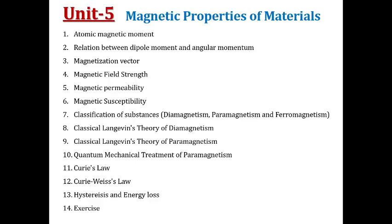In Unit 5, we study the magnetic properties of materials. The contents are: atomic magnetic moment, relation between dipole moment and angular momentum, magnetization vector, magnetic field strength, magnetic permeability, magnetic susceptibility, classification of substances such as diamagnetic, paramagnetic, and ferromagnetic, classical Langevin theory of diamagnetism, classical Langevin theory of paramagnetism, and quantum mechanical treatment of paramagnetism.